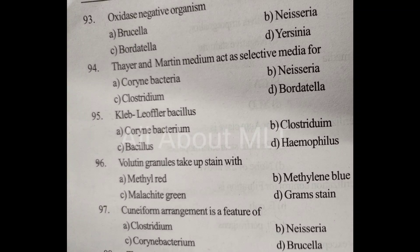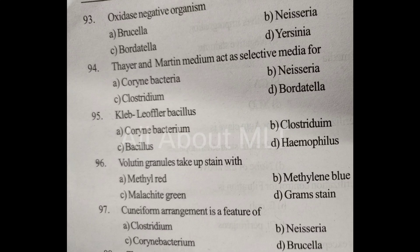Volutin granules take up stain with. Option A: Methyl red. Option B: Methylene blue. Option C: Malachite green. Option D: Gram stain. Answer is Option B: Methylene blue.